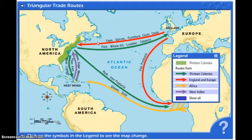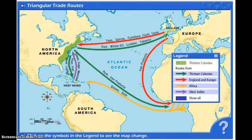Both of these triangular trade routes are supporting mercantilism. Primarily, the first route follows the theory of mercantilism we just talked about. So this is the triangular trade, and these are the products that are being shipped.